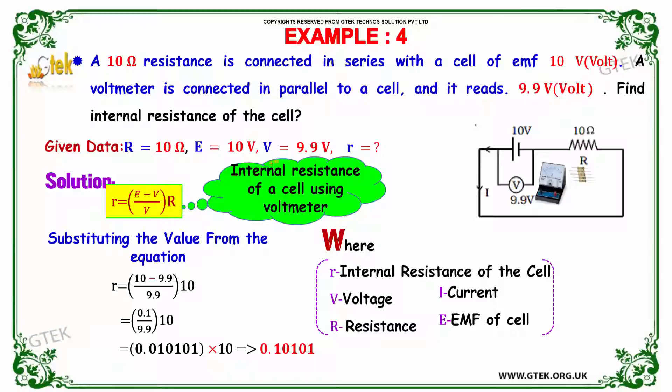So substituting the value here, you will be getting 10 minus 9.9 divided by 9.9 into 10. So 10 minus 9.9 is 0.1, 0.1 divided by 9.9 into 10, you got 0.010101 into 10, you got the value as 0.10101. That's the answer. So the internal resistance is 0.10101 ohm.